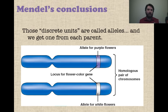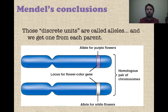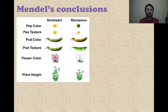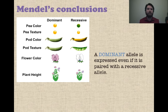He concluded there have to be these discrete units — he called them alleles — and you have to get one from each parent. That's the only way to explain how the white flower color skipped a generation. For example, if you have a pair of chromosomes, you have an allele for purple flower on one and an allele for white flower on another — you get one from each parent. Then you see which one is expressed.